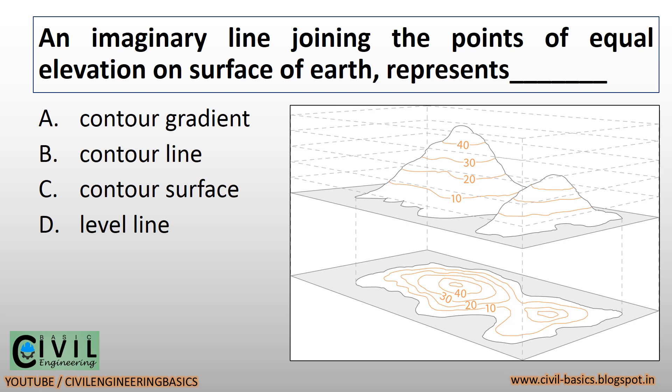An imaginary line joining the points of equal elevation on the surface of the earth represents a contour line. You can see the contour lines of a hill.